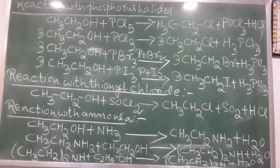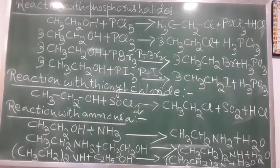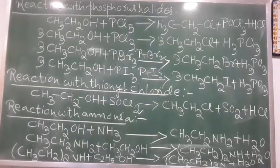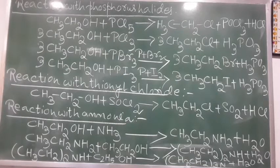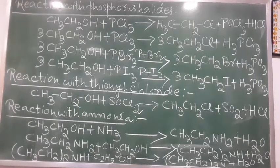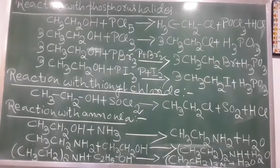The next reactions are with phosphorus halides. Phosphorus halides such as PCl₅, PCl₃, PBr₃, or PI₃ react with alcohols to form corresponding haloalkanes. Reaction with thionyl chloride, SOCl₂: on treatment with thionyl chloride in the presence of pyridine, alcohols form chloroalkanes. For example: C₂H₅OH + SOCl₂ gives C₂H₅Cl + HCl + SO₂. The reaction with thionyl chloride is preferred because the byproducts SO₂ and HCl are gases and can be easily removed from the reaction mixture.